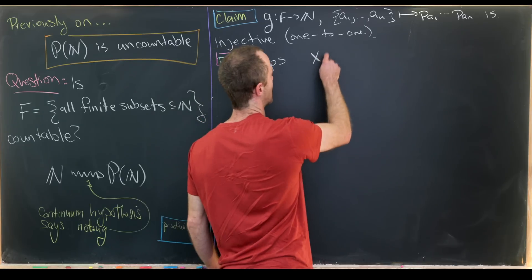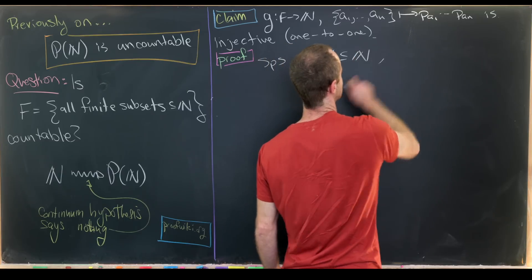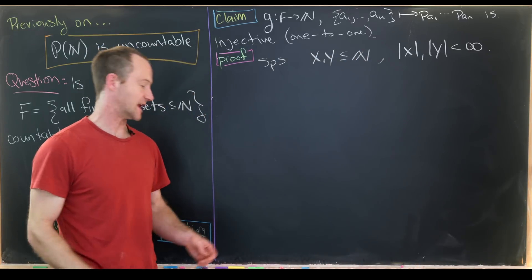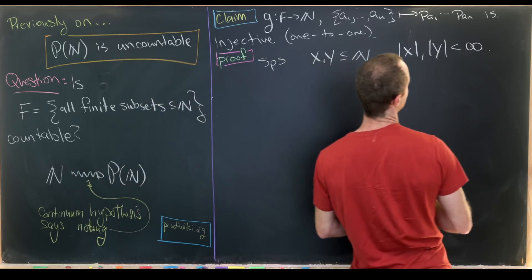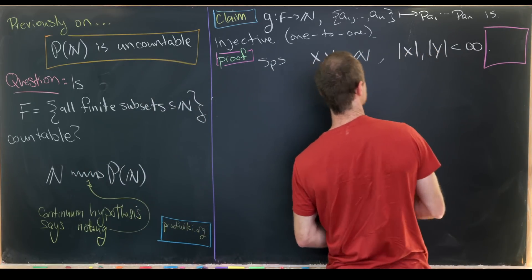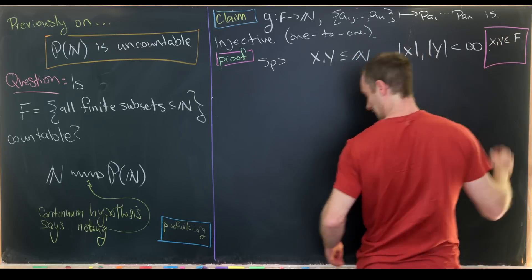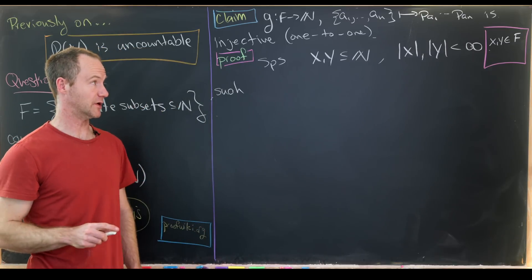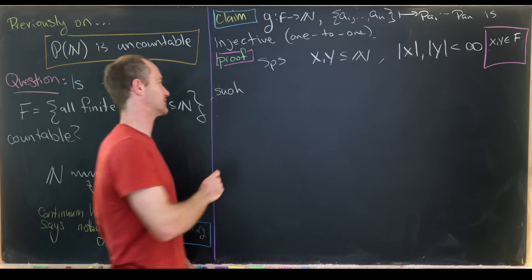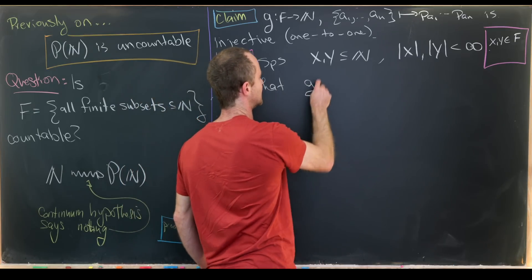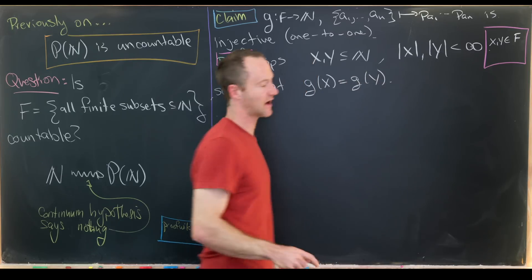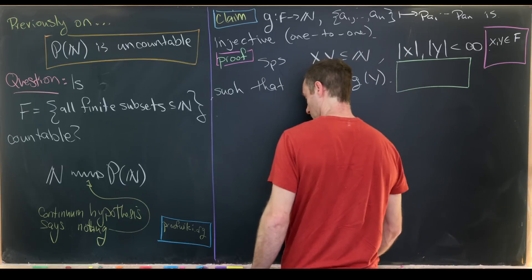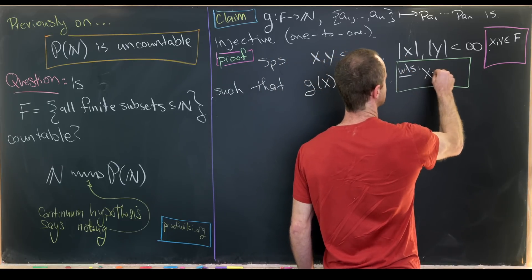Now we'll show this is an injective function. Let's suppose we have X and Y, which are subsets of natural numbers with cardinality less than infinity. In other words, they are inside F. This is exactly what it takes for these two sets to be in F.